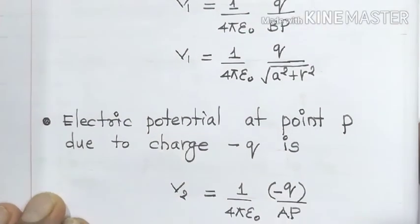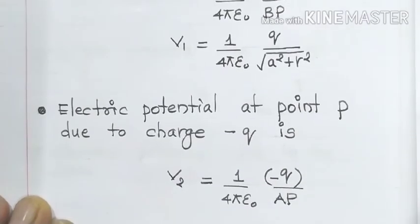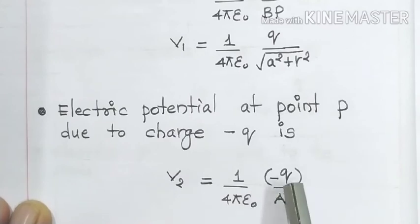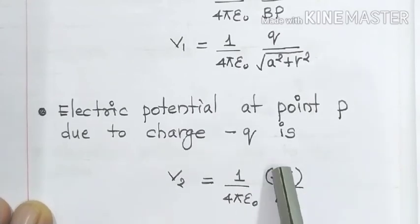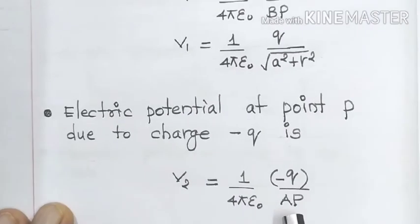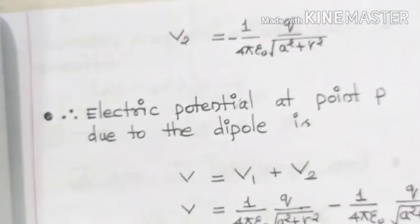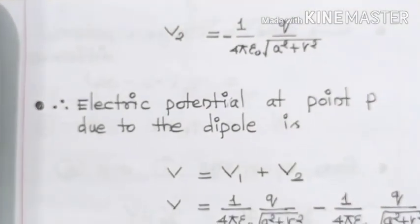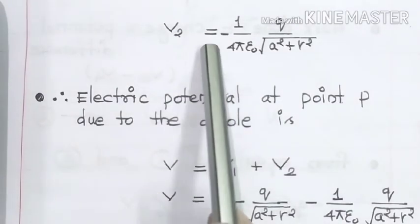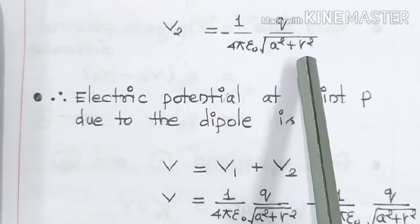Similarly, electric potential at point P due to charge minus Q: V₂ is equal to 1/(4πε₀), and in the place of Q I have written minus Q, and the distance is AP. The value of AP has been calculated already. So V₂ is equal to minus 1/(4πε₀) × Q divided by square root of a² plus r².